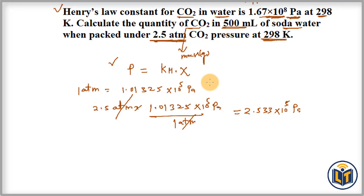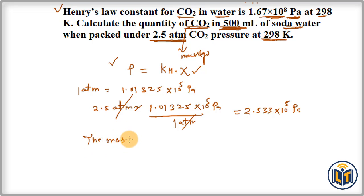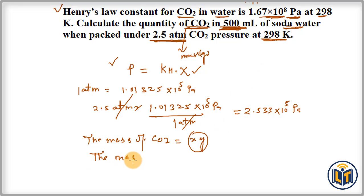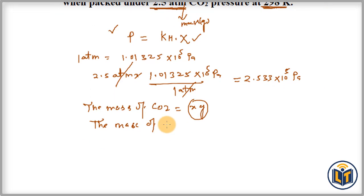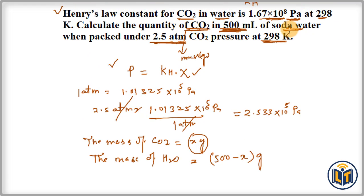The mole fraction of the solute equals moles of solute divided by (moles of solute plus moles of solvent). We need moles of CO₂ and water. Since only the volume of soda water is given, we assume the mass of CO₂ is x grams, so the mass of water is (500 − x) grams, because the total mass must equal 500 grams.